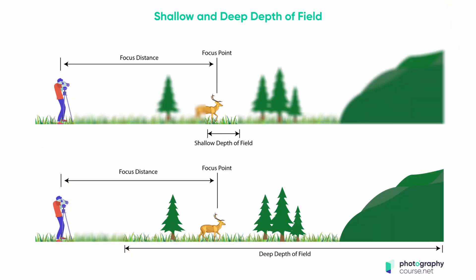The depth of field in a photograph is the distance between the closest point to the camera and the point furthest away from the camera that is acceptably sharp. In any photo you can have a great variety in how much depth of field you've got depending on a number of different factors, and I'm going to talk to you about those in this video. The key thing that most people know about with depth of field is the aperture.